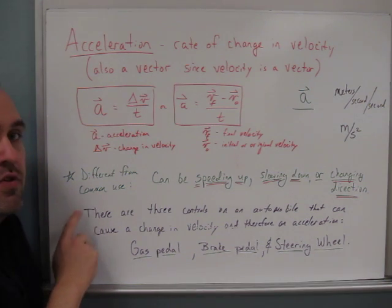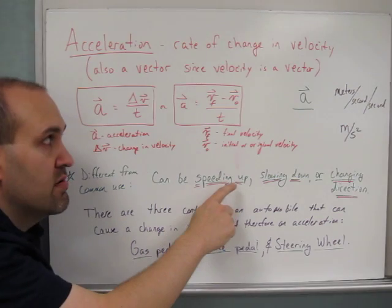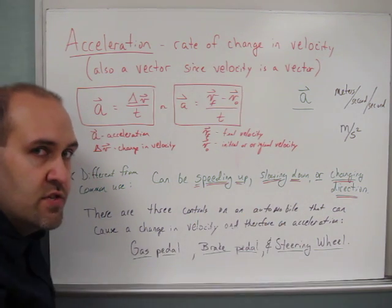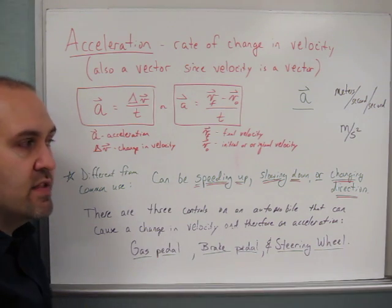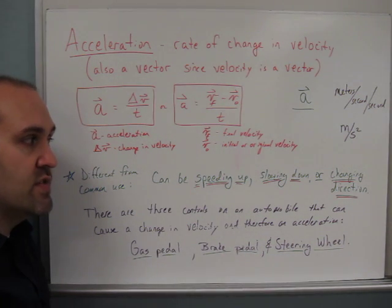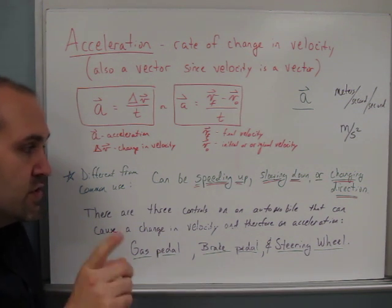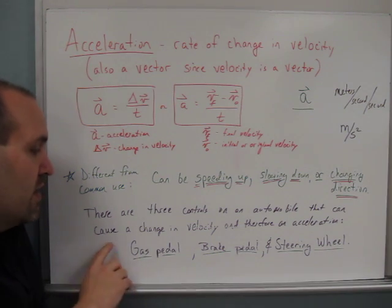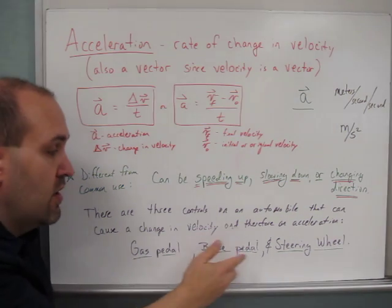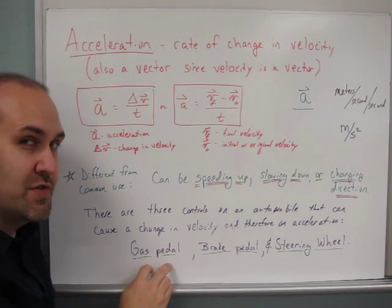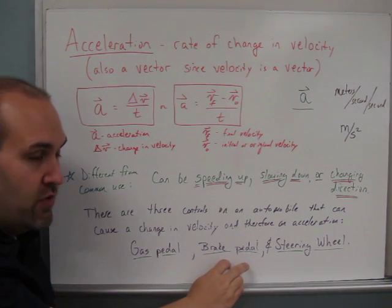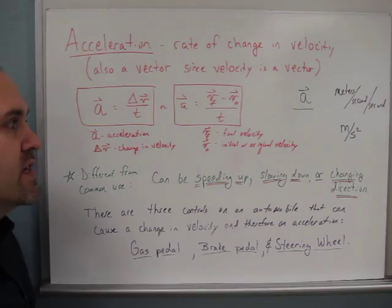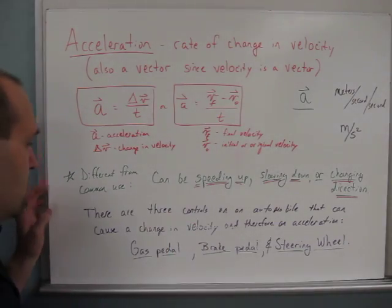Just remember, this is different from the common use. In physics, acceleration can mean speeding up, it can mean slowing down, which is kind of strange, or it can mean changing direction. All of those things would indicate that the object is accelerating: if it speeds up, if it slows down, or if it changes direction. Just to remind you, another way to think about it is there are three controls on a car that can cause a change in velocity and therefore an acceleration. Those three controls are the gas pedal, which hopefully causes you to speed up, the brake pedal, which hopefully causes you to slow down, and the steering wheel, which hopefully causes you to change direction. Let's look at one example of this acceleration equation and that'll be it for the video.